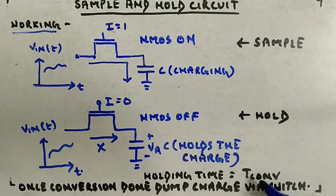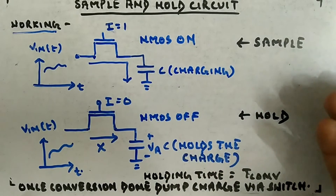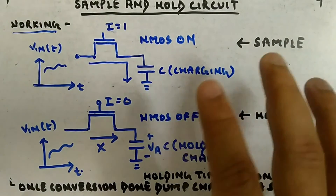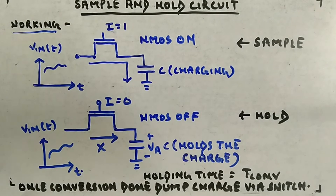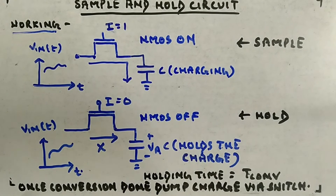The holding time is usually equal to the conversion time of the analog-to-digital converter — you hold the capacitor value until the conversion is complete. Once the analog signal has been converted to digital, you dump the charge via the switch. It's a simple circuit but mostly people are not aware of it, and it is very important. With this I'll complete the analog-to-digital conversion topic. We've also seen digital-to-analog conversion, and now I'll move to some other remaining topics before closing digital circuits.